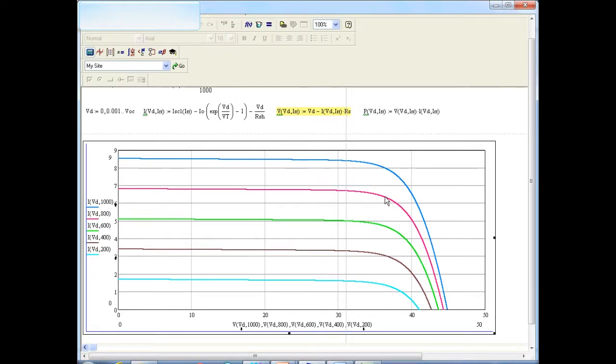And on the y axis, I have the currents for each of the five different irradiance levels. Then I copy this plot and take it to the PowerPoint where I will superimpose this on the experimental IV curves.